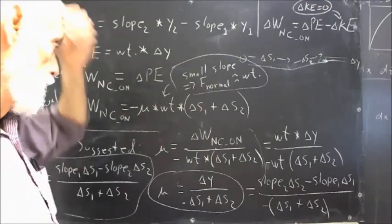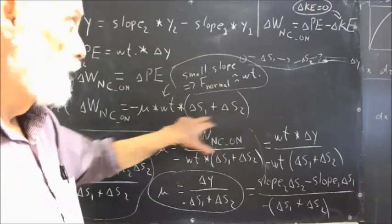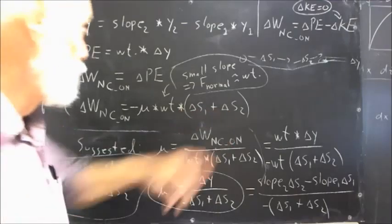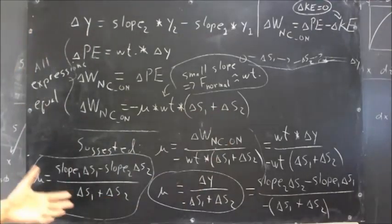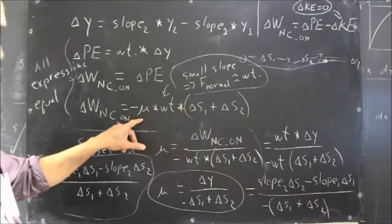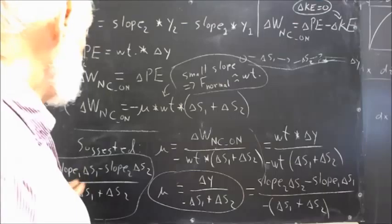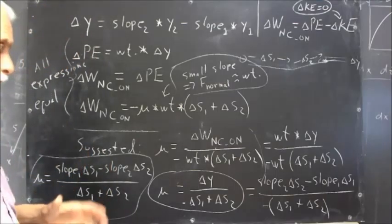And I'm using the weight here because we're using a small slope, and the small slope approximation: normal force is approximately equal to the weight. So this is mu times the normal force, but we're using weight for the normal force.